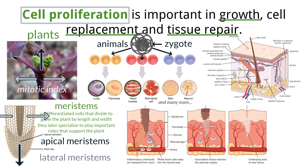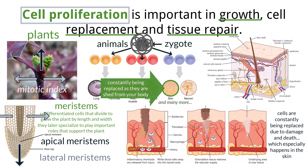Remember, mitosis is used to replace cells that have died, as well as repair cells that have been damaged. The cells in our body are constantly being replaced due to damage and death. Adults lose about 500 million skin cells a day, and so skin cells are constantly being replaced by proliferation. Not only is proliferation important for replacing dead cells, it is also how we repair damaged cells.